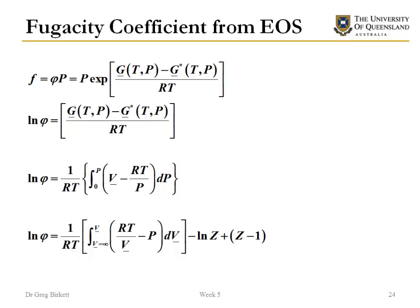Our starting point here is the definition of fugacity and the fugacity coefficient. The two equations that we have for calculating fugacity from an equation of state are the two equations down the bottom. Our first equation here and our second equation here. The choice is dictated by the type of equation of state that we have, either a V equals equation of state or a P equals equation of state. In this example we're going to be looking at this equation here because we're going to be using a pressure equals equation of state.